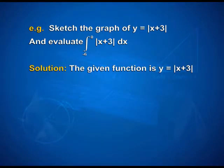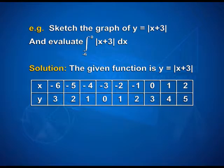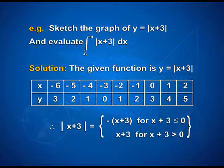For the solution, the given function is y = |x + 3|. We prepare a table of x and y coordinates: (-6, 3), (-5, 2), (-4, 1), (-3, 0), (-2, 1), (-1, 2), (0, 3), (1, 4), (2, 5). Since |x + 3| equals -(x + 3) for x + 3 ≤ 0, and (x + 3) for x + 3 > 0.